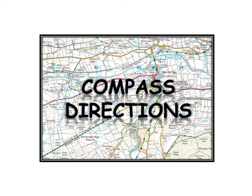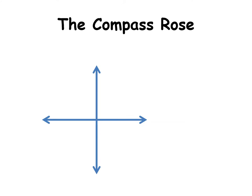Today we're going to be looking at compass directions. This is called a compass rose, and on this shape we're going to be putting the compass directions on. So you have north, you have east, you have south, and you have west.